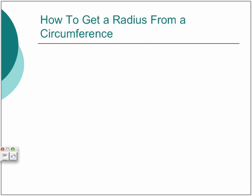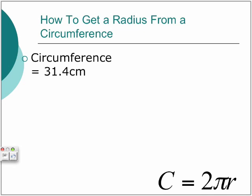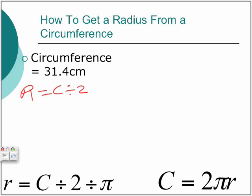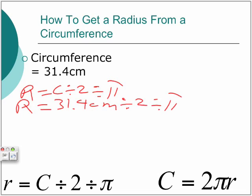This is how to get a radius from a circumference. So if my circumference was that, then that's the formula to get circumference. What you do is just do that backwards with this formula — you just fill it in.